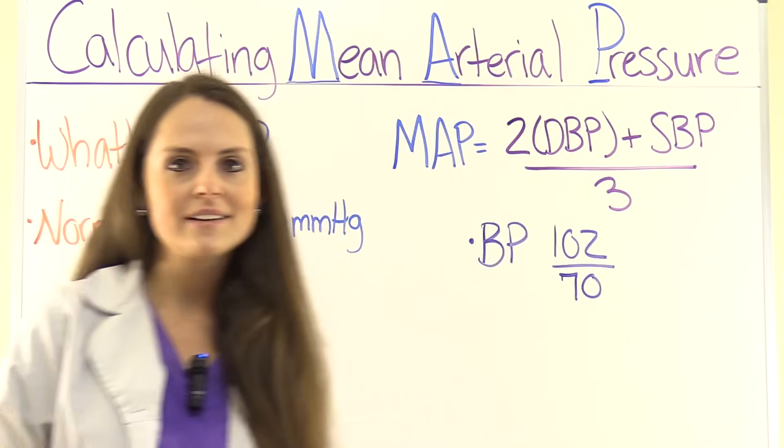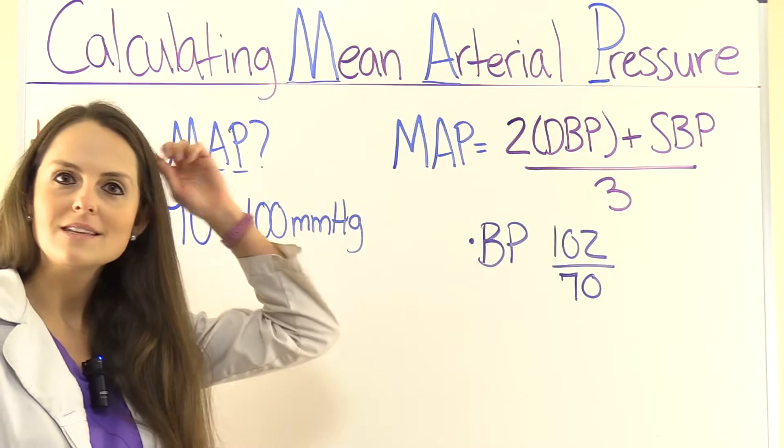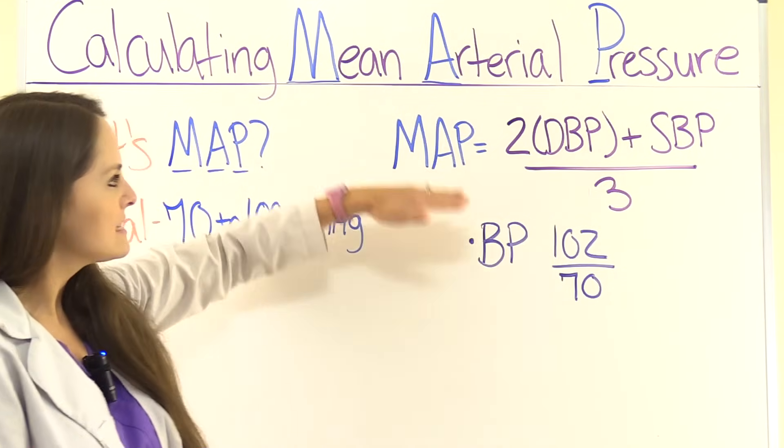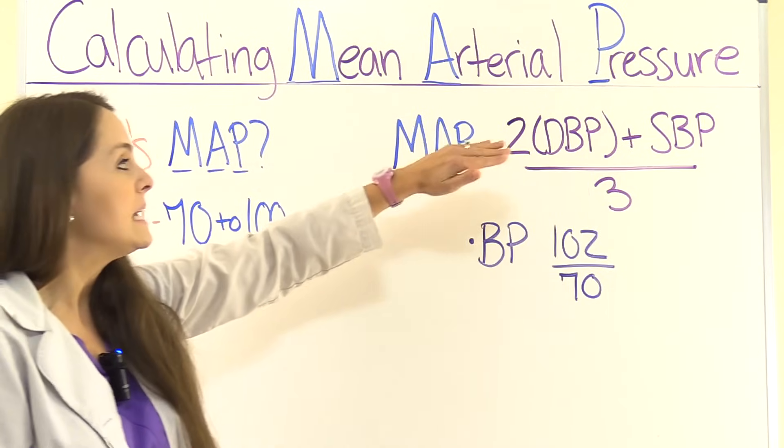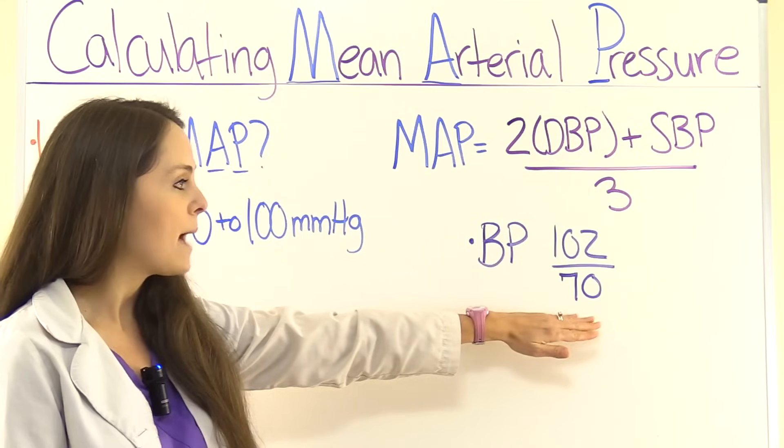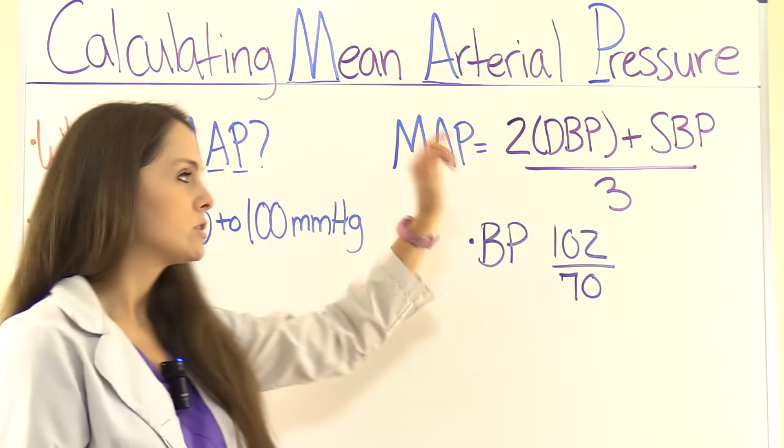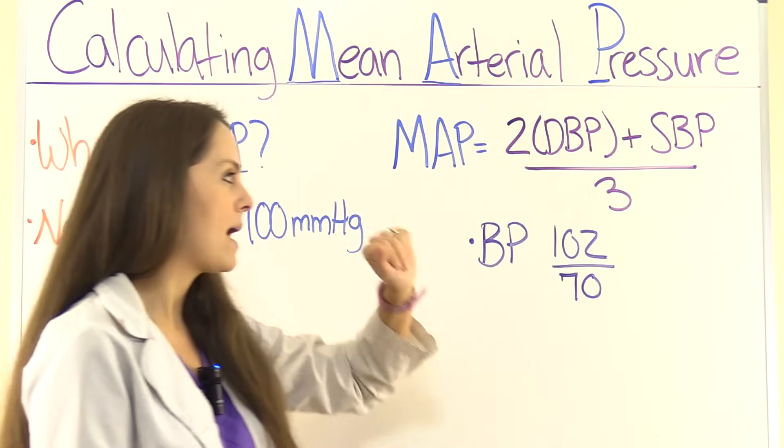So how do we calculate mean arterial pressure? Well, to do that, we have to remember this formula. So I would commit this to your memory. It says the mean arterial pressure is equal to the diastolic blood pressure, which is that bottom number, times 2, plus the systolic blood pressure, which is the top number, divided by 3.